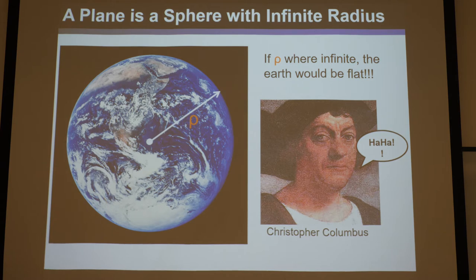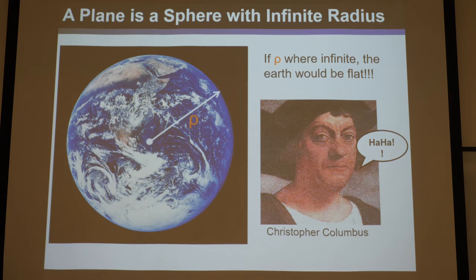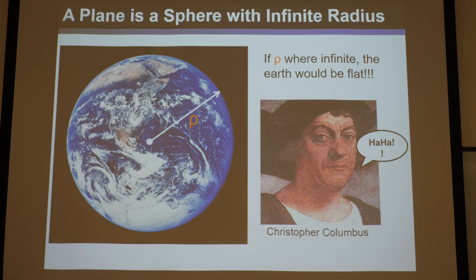A plane is really a sphere with an infinite radius. The reason the world looks flat to many people is because it's got a really large radius of curvature, so 1 divided by that large radius makes the curvature appear very small. If the Earth had an infinite radius it would indeed be perfectly flat — that's the definition of a plane. This works across multiple dimensions: a line is a one-dimensional analogue of a circle, and a plane is the two-dimensional analogue of a sphere.